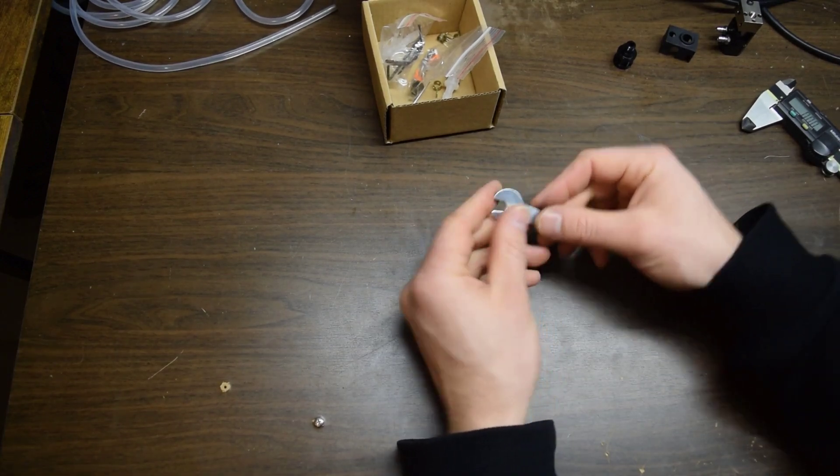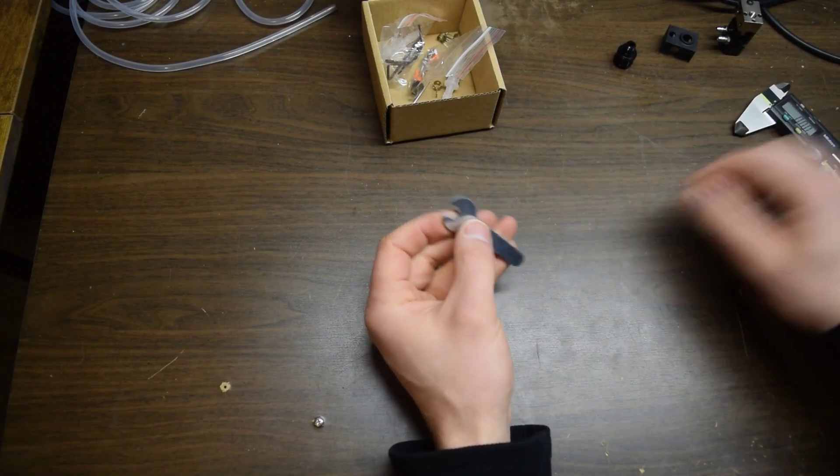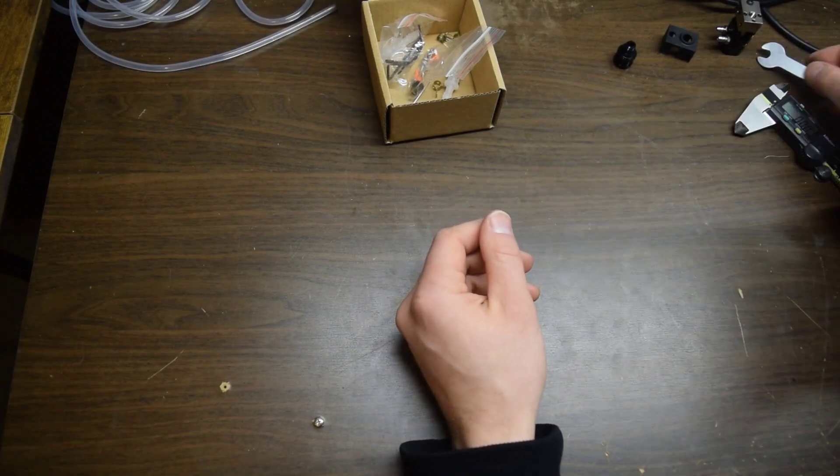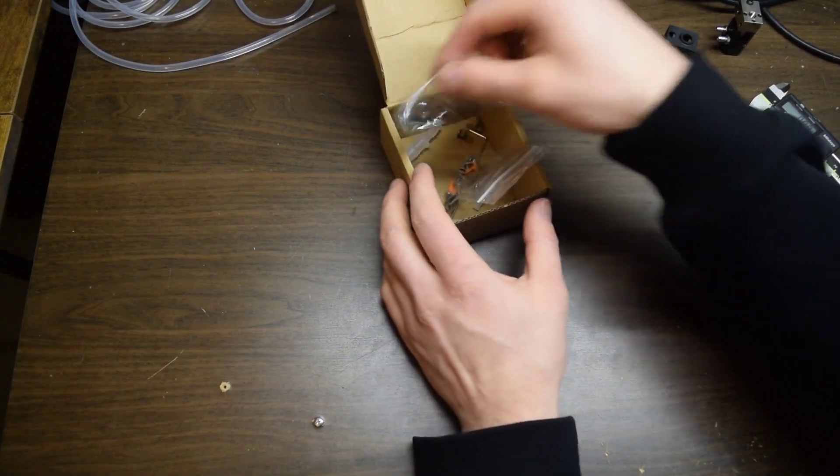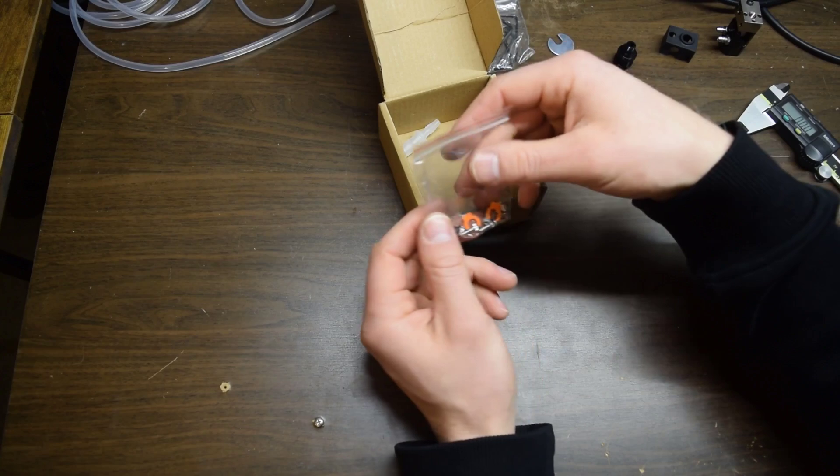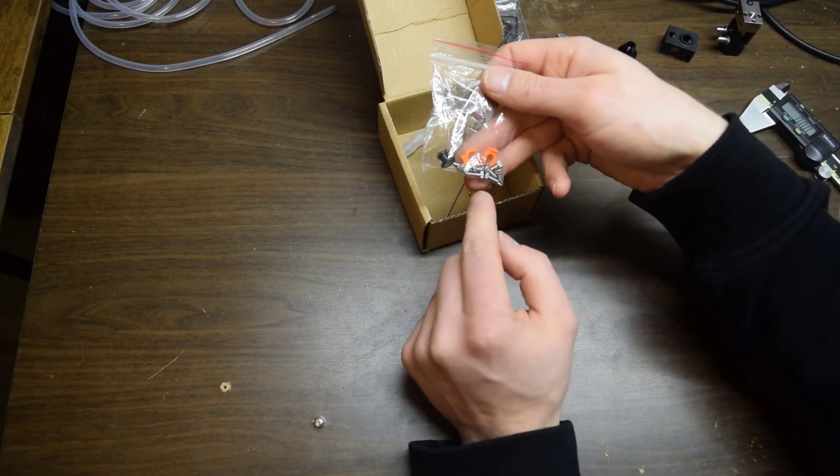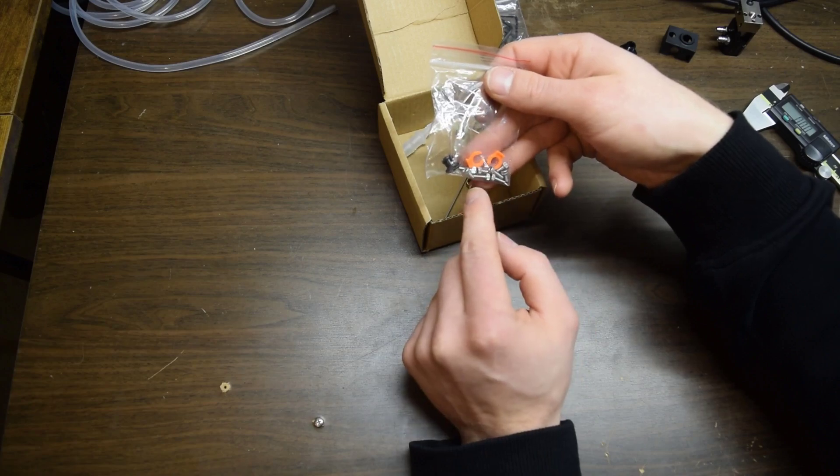We've got a wrench here. This is 7mm, so this will work for the heat brake and the nozzle. Bag of Allen keys, fantastic. I always like to have extra. Some screws for mounting the block there. We've got 1, 2, 3, 4.